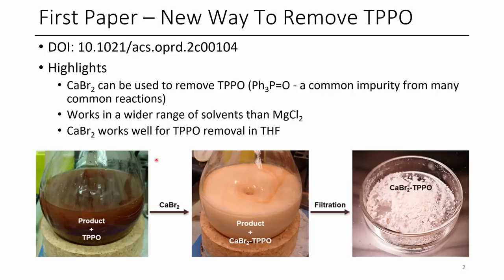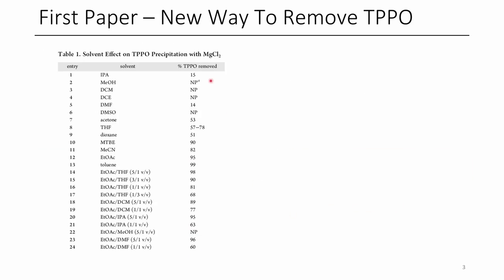However, when they used calcium bromide it did work. You can see in this scheme they have their reaction which contains TPPO. Upon treatment with calcium bromide, it stirred for some time and then the reaction is filtered, and usually they're able to remove almost all of the calcium bromide–TPPO complex. When they looked at magnesium chloride, several solvents did work but they usually had to use a lot of ethyl acetate or toluene, and with co-solvent mixtures they needed a large amount of ethyl acetate to remove most of the TPPO.